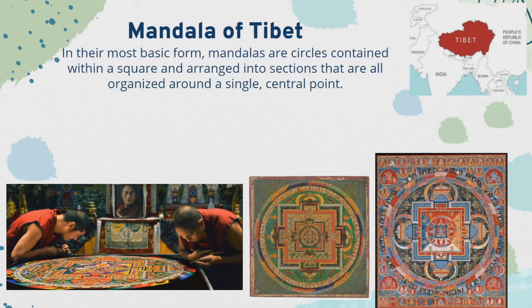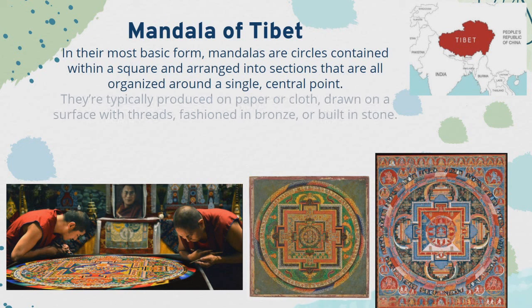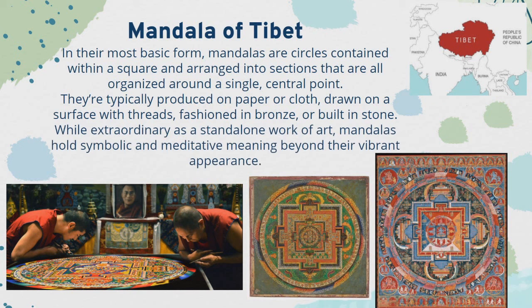In their most basic form, mandalas are circles contained within a square and arranged into sections that are all organized around a single central point. They are typically produced on paper or cloth, drawn on a surface with threads, fashioned in bronze, or built in stone. While extraordinary as a standalone work of art, mandalas hold symbolic and meditative meaning beyond their vibrant appearance.